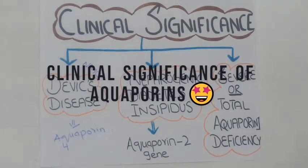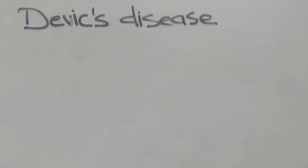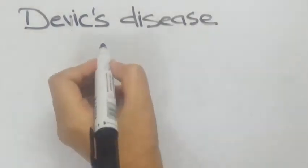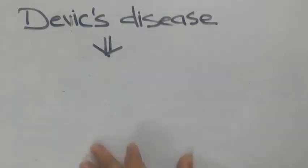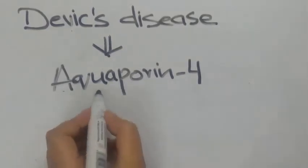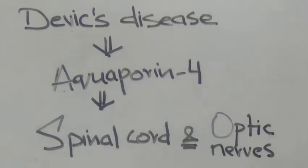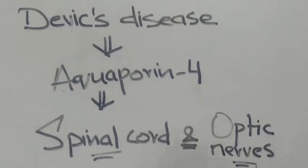Clinical significance of aquaporins. Number one is Devic's disease, also called neuromyelitis optica. It is an autoimmune disease in which there is an autoimmune reaction against aquaporin-4. This autoimmune reaction affects the spinal cord and the optic nerves, which are the nerves of the eyes.